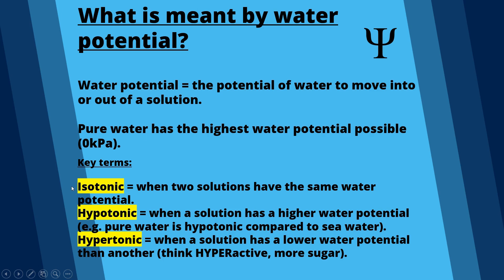Some key terms: isotonic is when two solutions have the same water potential — think of an isotonic sports drink like Lucozade or Powerade, which has the same water potential as blood. Hypotonic is when a solution has a higher water potential than another — for example, pure water is hypotonic compared to a sucrose or sodium chloride solution.